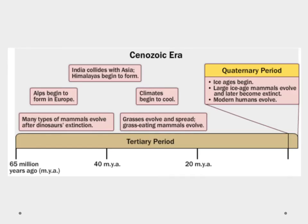Our quick overview of the Cenozoic Era: it happened from about 65 million years ago till today — we're in the Cenozoic Era right now. A bunch of different things happened. We remember 65 million years ago we had the extinction of the dinosaurs, and what we saw was this massive evolution of mammals. That's why we call this the Age of Mammals.